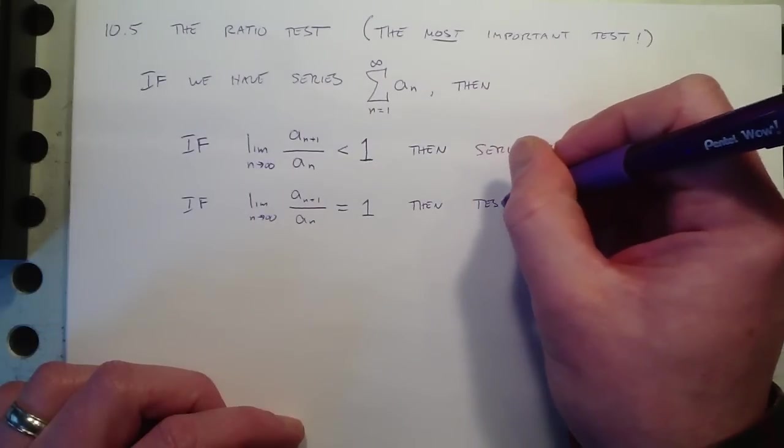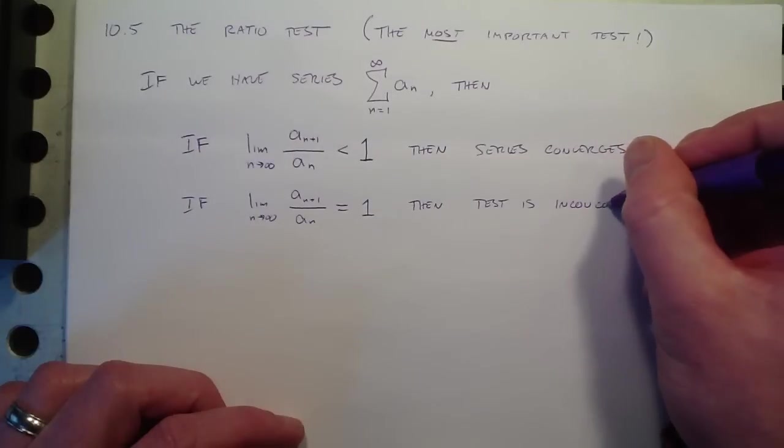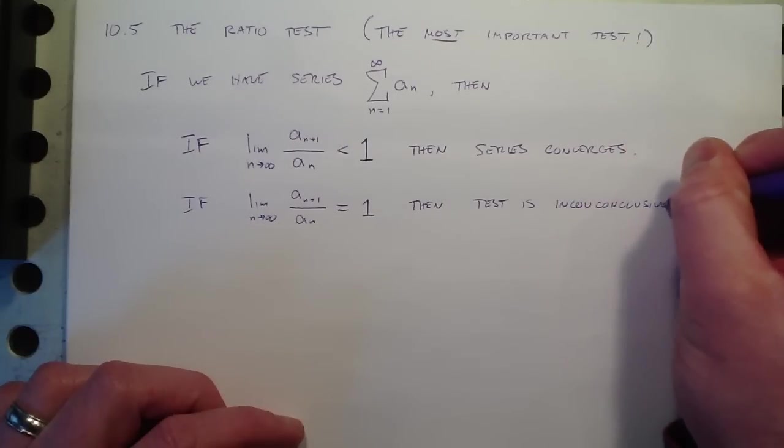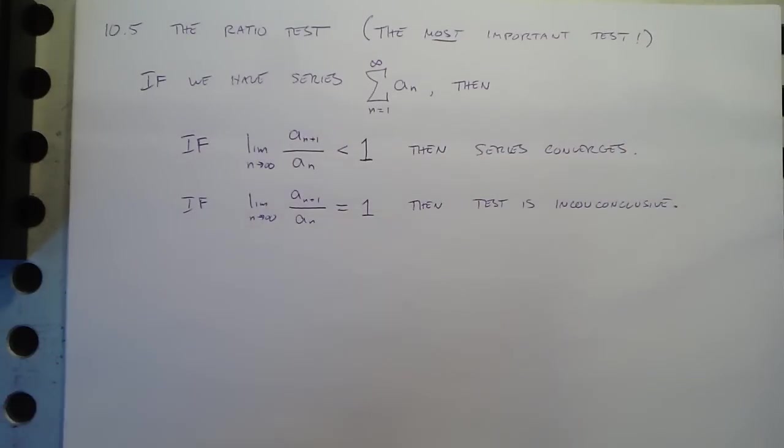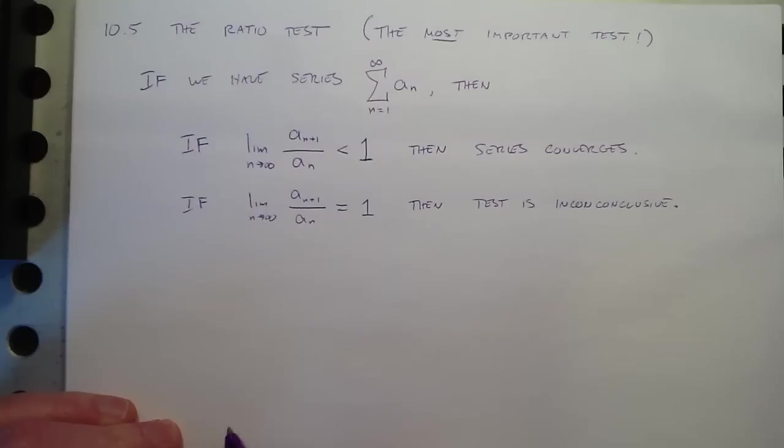If it's equal to 1, then the test is inconclusive. And you have to try something else. And that's not really going to happen to us a whole lot, except for having to check endpoints where it's equal to 1, and we'll check that just by looking at what the series is for those boundary values. More about that later.